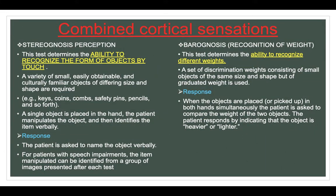Combined cortical sensation — stereognosis perception: this test determines the ability to recognize the form of objects by touch. A variety of small, easily obtainable and culturally familiar objects of differing size and shape are required — e.g., keys, coins, combs, safety pins and pencils. A single object is placed in the patient's hand; the patient manipulates the object and identifies it verbally. For patients with speech impairments, the item manipulated can be identified from a group of images presented after each test.